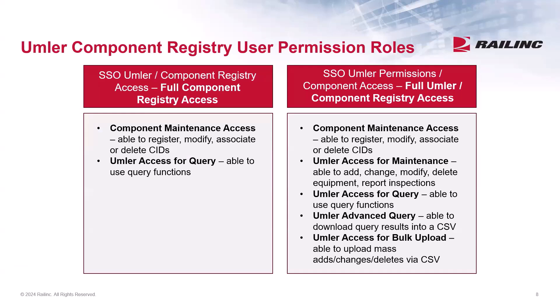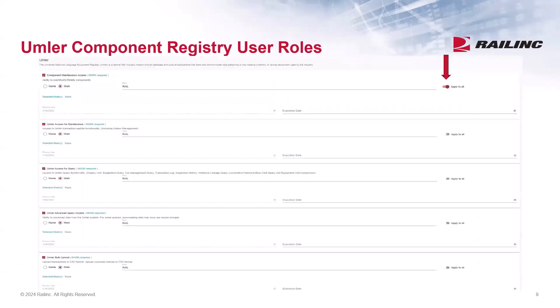The UMLR company administrator must approve the permissions, so be sure to select the correct roles. When selecting the access, indicate the mark that you want the permissions for, and use the Apply to All function to carry that mark for all the permissions selected. The company's administrator will review and approve the permissions, and then an email confirmation will be sent once it has been approved.